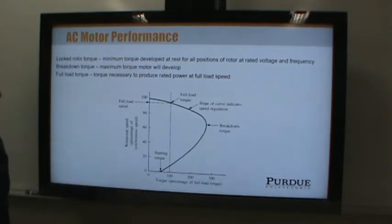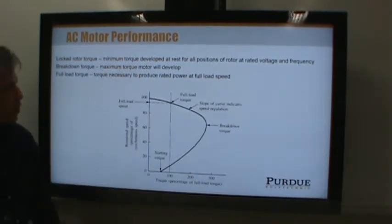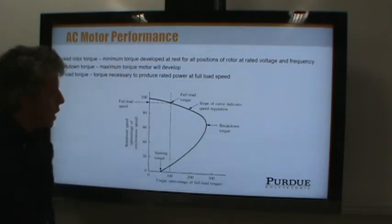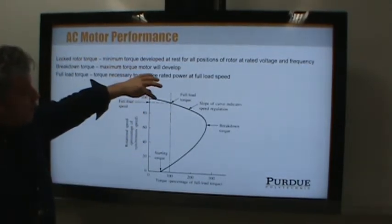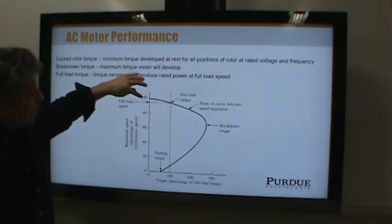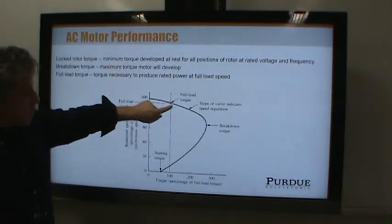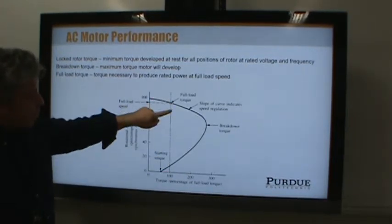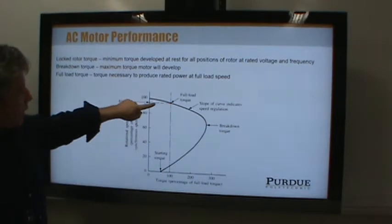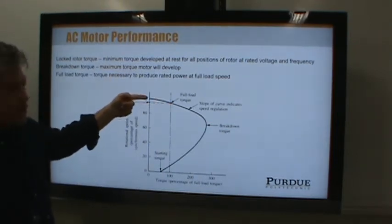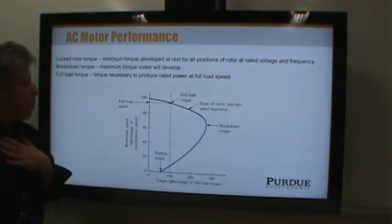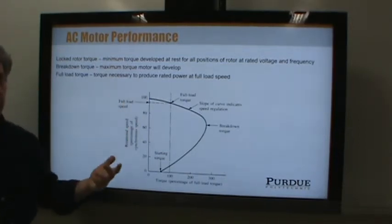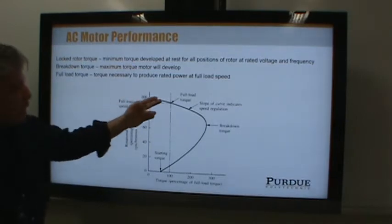The locked rotor torque, also called starting torque, is that point on the axis. The breakdown torque is the maximum torque the motor will develop. If you start the motor unloaded and reach full speed, then apply load, you reach the full load speed at the full load torque — that's the rated operating point. The speed is not quite the theoretical maximum because most AC motors slip a little bit.